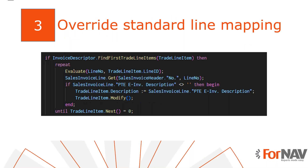Just like we can change header information, we can also change the line information. Since a header can contain multiple lines, we need to iterate over the data set. Just like with the seller information, there is a function to get the lines for the invoice descriptor.